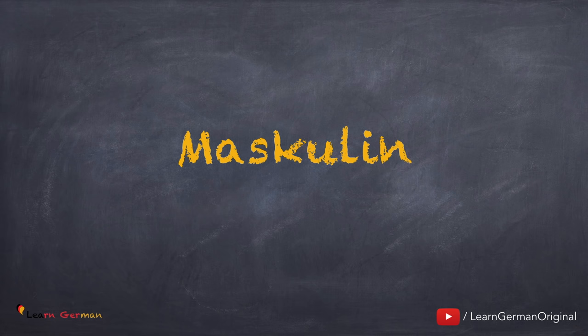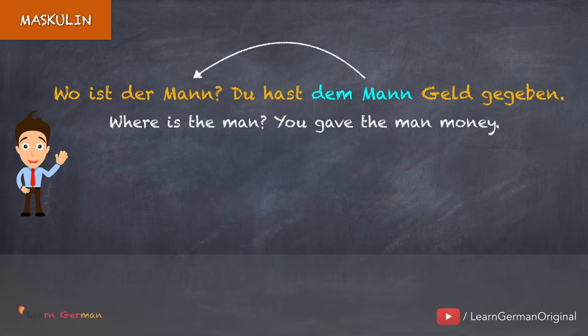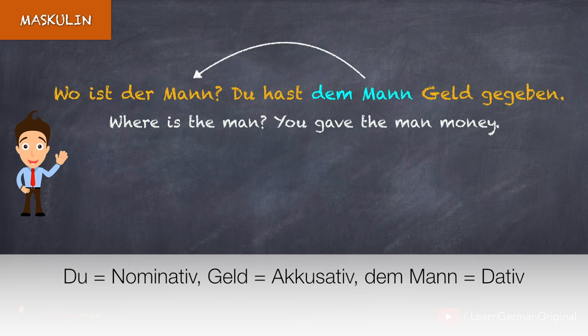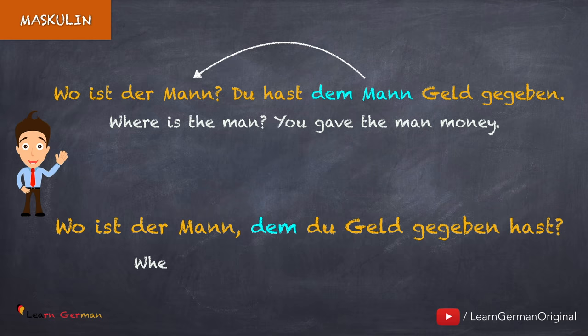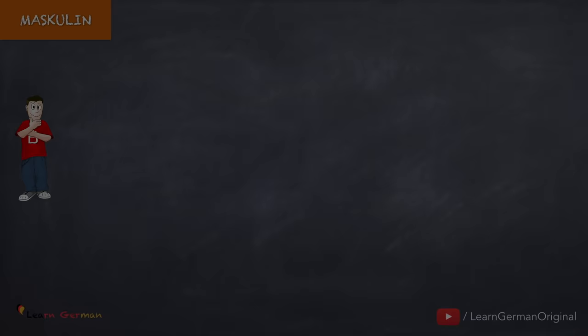Wir beginnen jetzt mit dem Maskulinartikel. Hier ist der erste Satz: Wo ist der Mann? Du hast dem Mann Geld gegeben. Der zweite Satz gibt uns mehr Information über den Mann. In diesem Satz ist Du Nominativ Subjekt, Geld ist Akkusativ Objekt und dem Mann ist Dativ Objekt. Der Relativsatz sieht so aus: Wo ist der Mann, dem du Geld gegeben hast? Dem als Pronomen ersetzt dem Mann. Das konjugierte Verb steht am Ende.